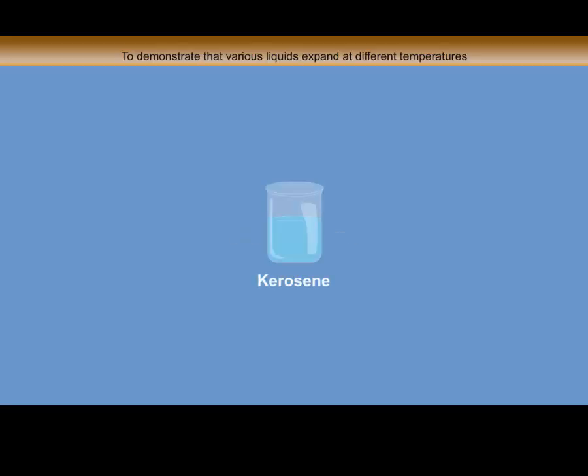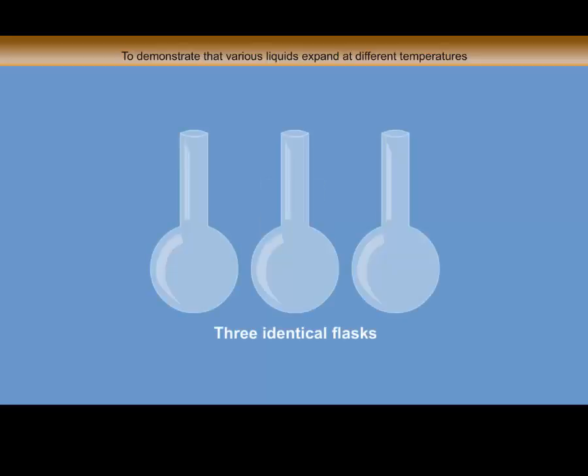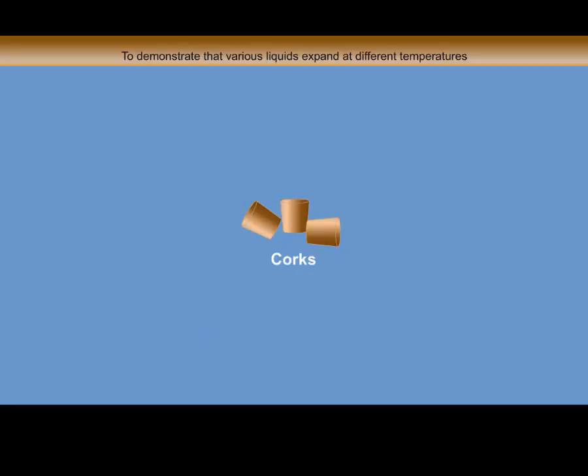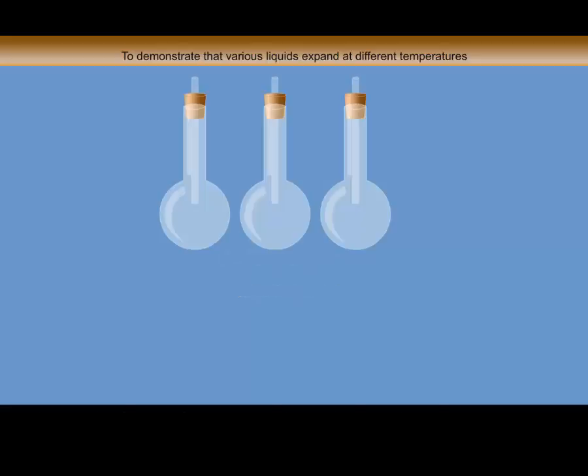Things required: kerosene, ethyl alcohol, water, three identical flasks, corks, capillary tubes. Procedure: Take three identical flasks and fit them with corks having identical capillary tubes.